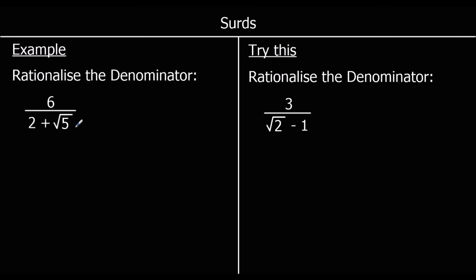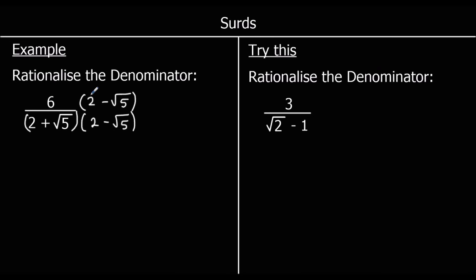Where we've got 2 plus root 5 on the denominator, we're going to multiply by 2 minus root 5. And whatever we multiply the bottom by, we have to multiply the top by as well. So if we multiply top and bottom by 2 minus root 5, we're going to get rid of the surd from the denominator. Let's do these multiplications: on the top, 6 times 2 is 12, and 6 times negative root 5 is negative 6 root 5.